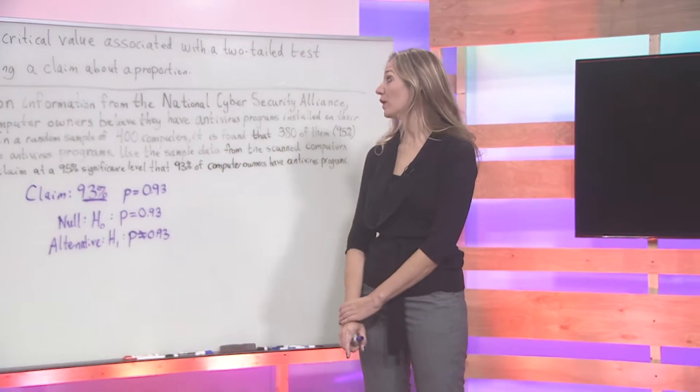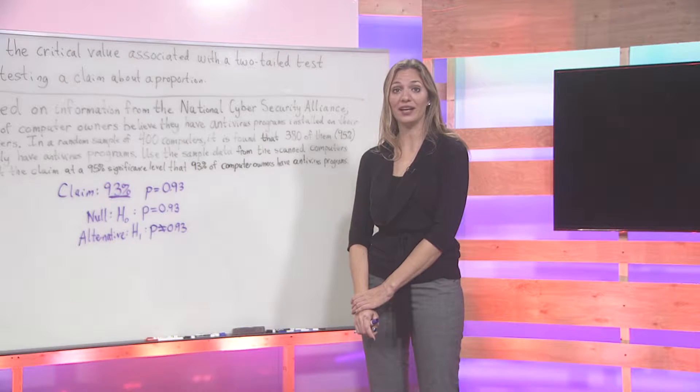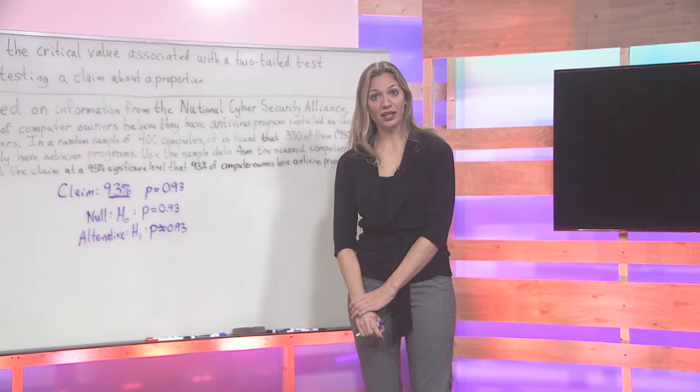In this exercise, we are going to find the critical value associated with a two-tailed test when testing a claim about a proportion.